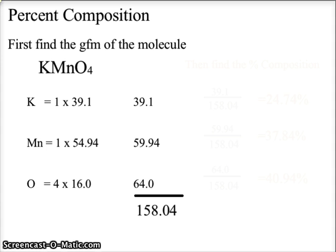So let's take a look at the molecule KMnO4, potassium permanganate, and the first thing we want to do is find the GFM or the gram formula mass, also known as the molar mass. In this case, potassium has one atom, manganese has one atom, and oxygen has four atoms.